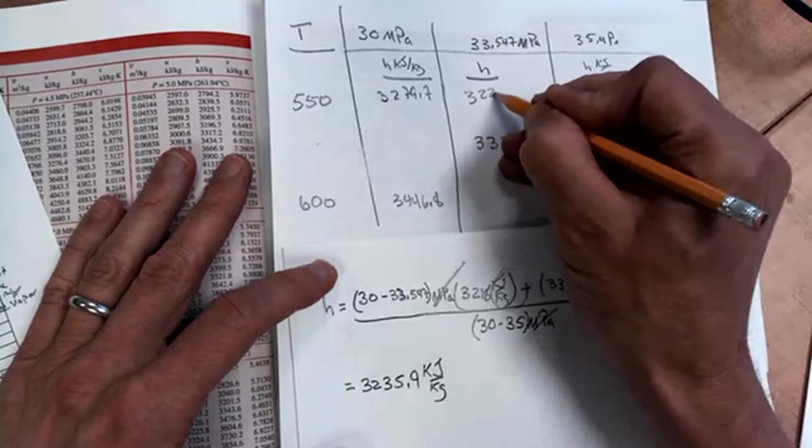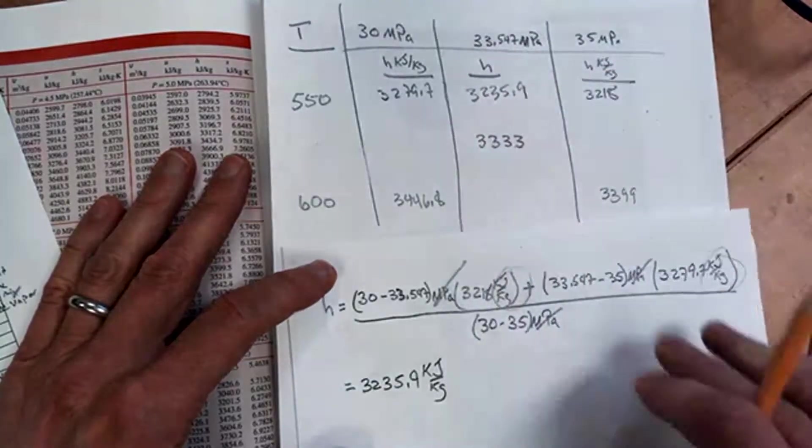So I'm going to write that here. 3,235.9 kilojoules per kilogram.